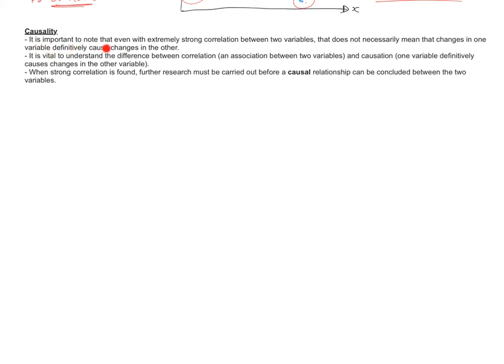And lastly, causality. It's really important to note that even if you have strong correlation between two variables, that doesn't necessarily mean that changes in one variable definitively cause changes in the other. You have to understand the difference between correlation. It's an association between two variables. It could just be a coincidence. It could be more than that. But that's different from correlation to causation, which is where one variable definitively causes changes in the other variable. When you find a strong correlation, you need to do further research to actually determine whether there's a causal relationship between those variables and conclude that one variable causes changes in the other.